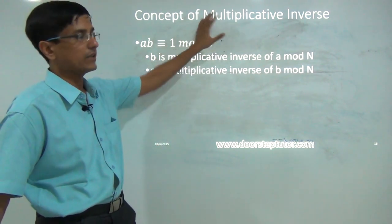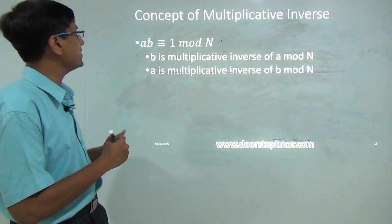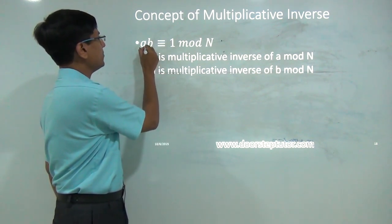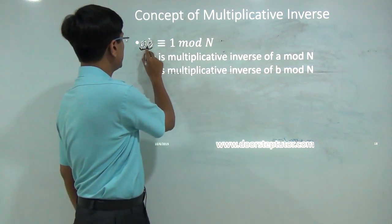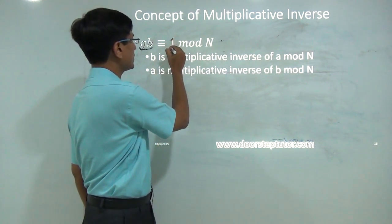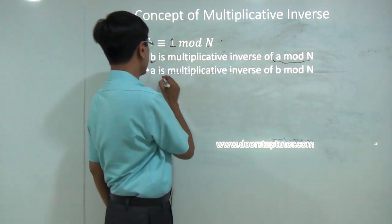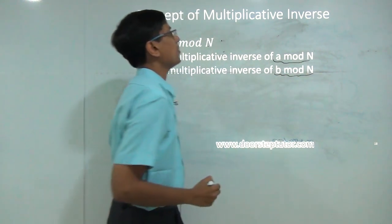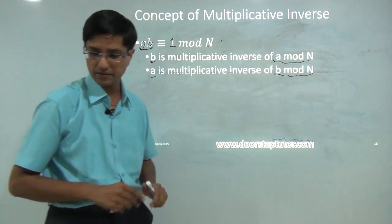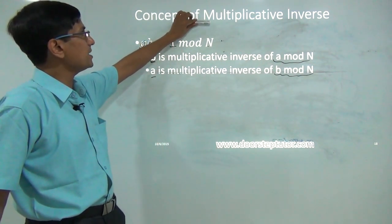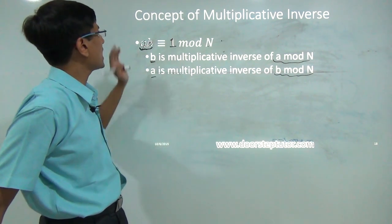There is also a concept of multiplicative inverse, which will be discussed in subsequent classes. Two numbers a and b are multiplicative inverses of each other mod n if their product gives a remainder of 1 when divided by n. This is just a definition — the application of multiplicative inverse will be covered later.